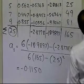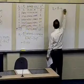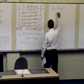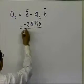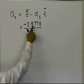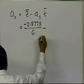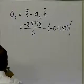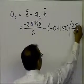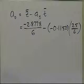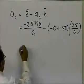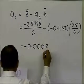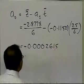And similarly, I'll find a0. a0 is nothing but z-bar minus a1 times t-bar. Now, z-bar values are simply the average of the z values, which I have, 2.8878 divided by 6. That's the summation of z-i, we have 6 values, minus a1, which I just found, minus 0.1150, times the average value of the t-value, which is 25 divided by 6. 25 is the summation of the t-values, and there are 6 t-values. And this a0 here turns out to be minus 0.0002615. That's what I get for a0.